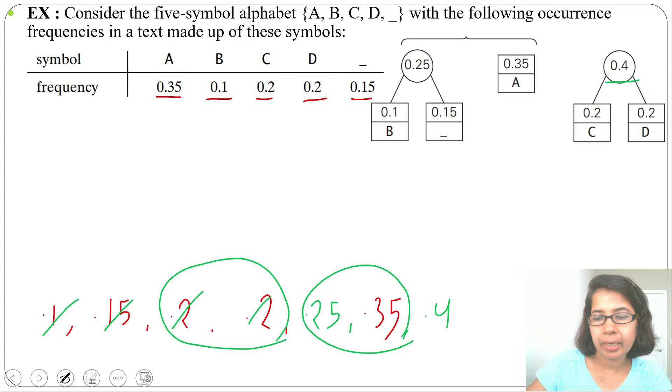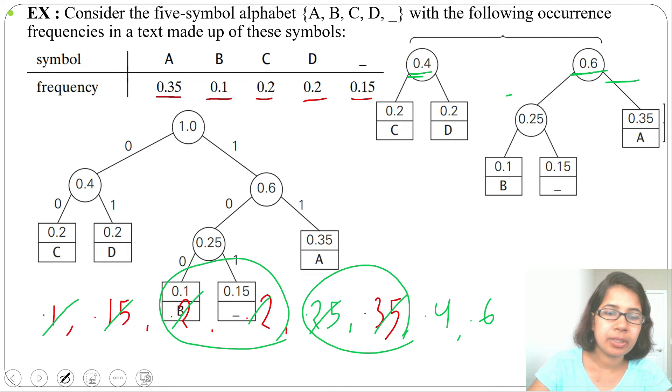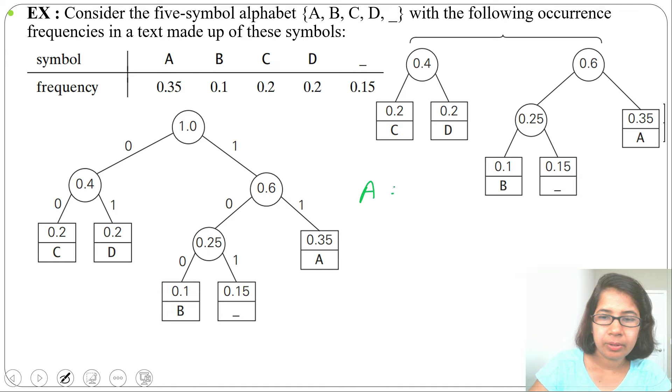Next we'll add 0.25 and 0.35. After addition we'll get 0.6 and we'll insert 0.6 in the queue. Next we'll add 0.4 and 0.6. After addition we'll get 1.0.